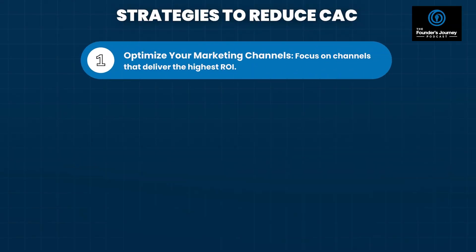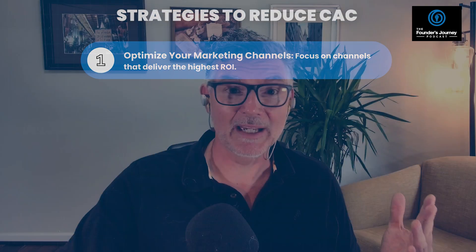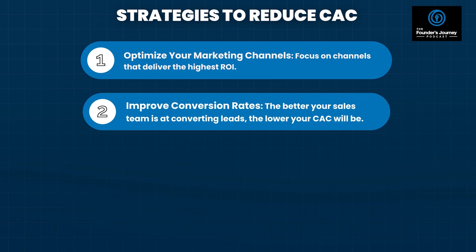Here are some strategies that can really help you reduce CAC. Number one: optimize your marketing channels. Focus on the channels delivering the highest ROI. Don't just spend broadly — look at those channels and ask where you're driving leads and where those leads are converting. Focus there and start eliminating channels that aren't working. Track performance and shift budgets to the most effective channels. Number two: improve your pipeline conversion rates, from the top of the funnel on down. The better your website or sales team is at converting leads, the lower your CAC will be — small improvements in conversion rates can make a huge difference.